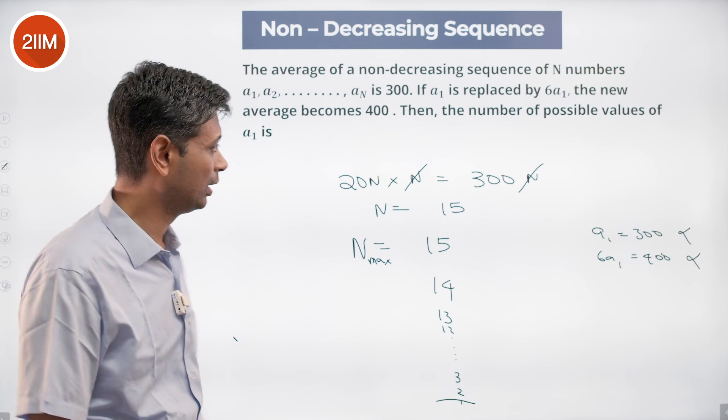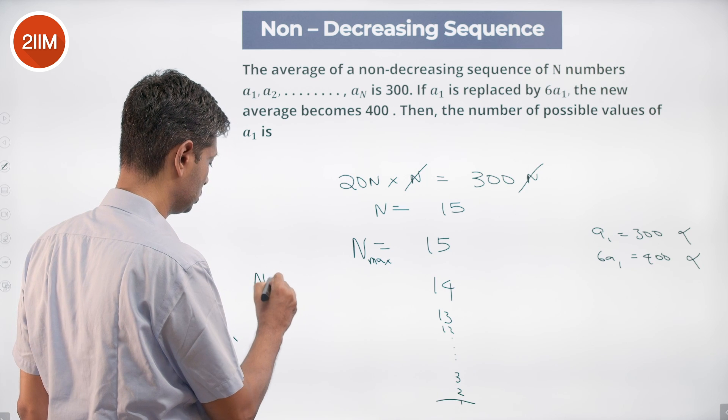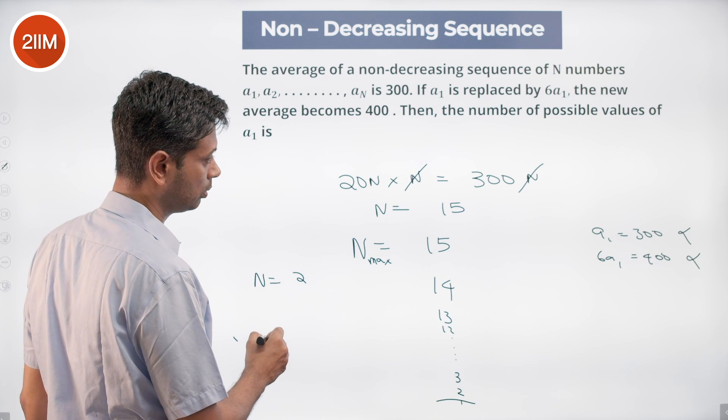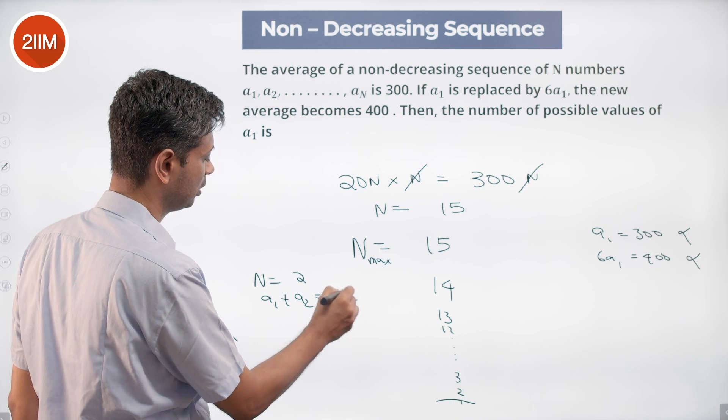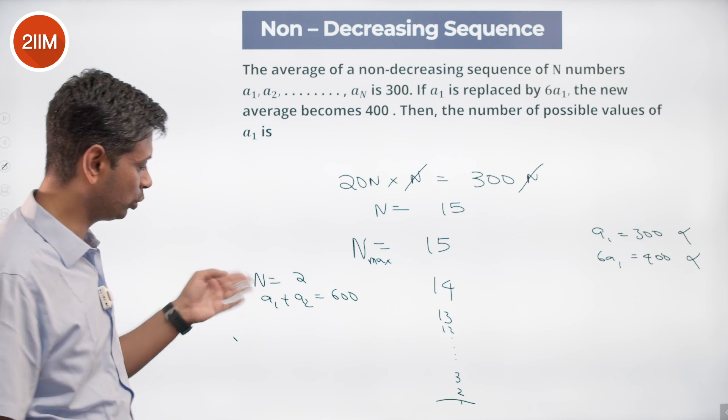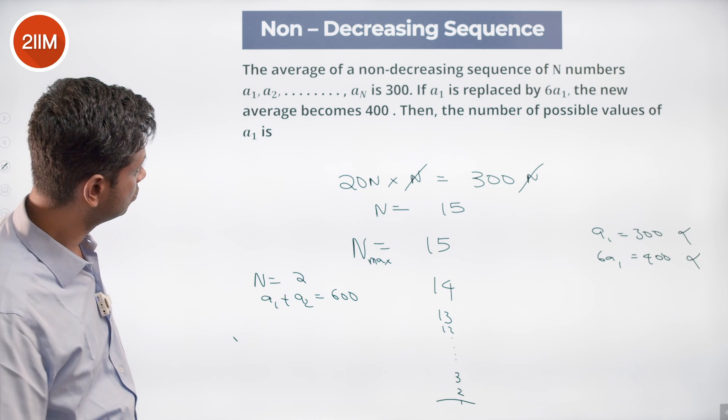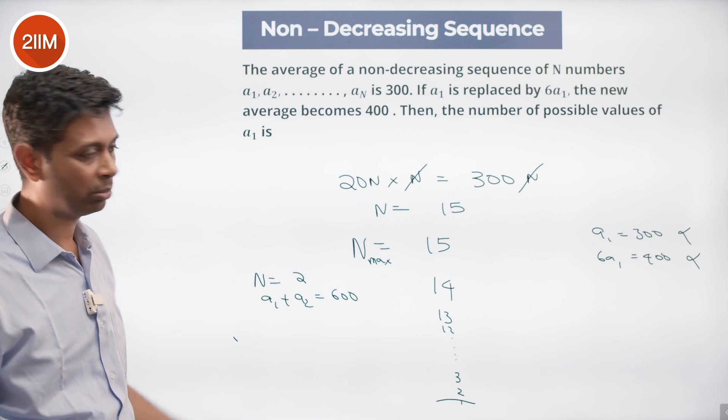But everything else will work. N = 2: a₁ + a₂ = 600. a₁ is 2 × 15, which is 30. a₂ can be the remaining. This will work.